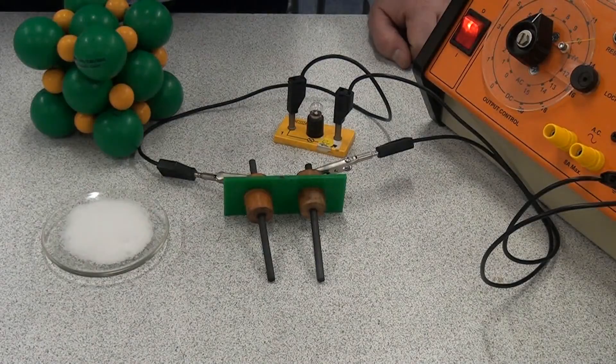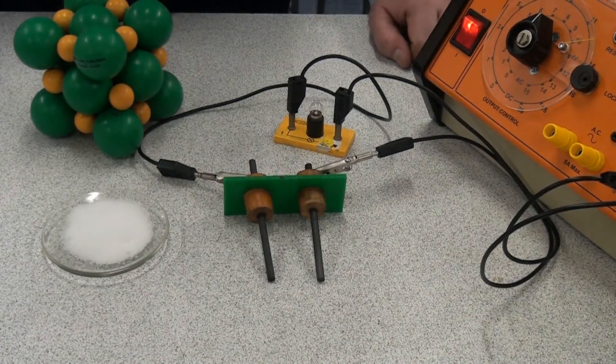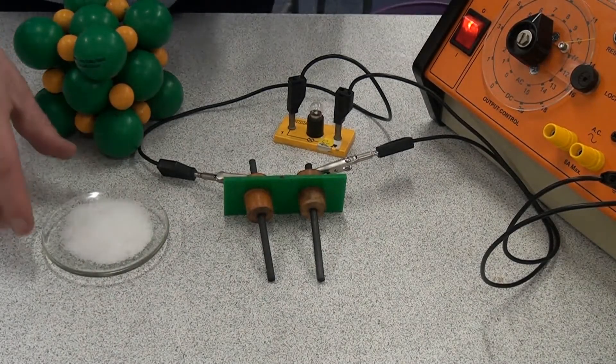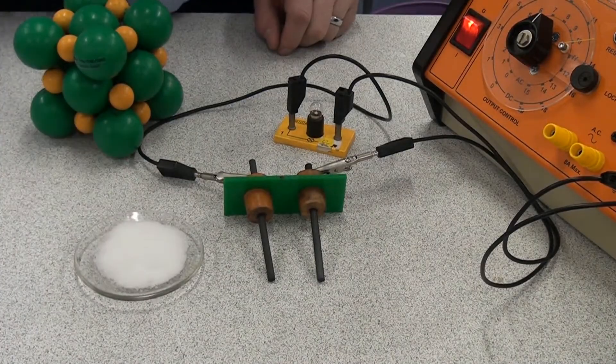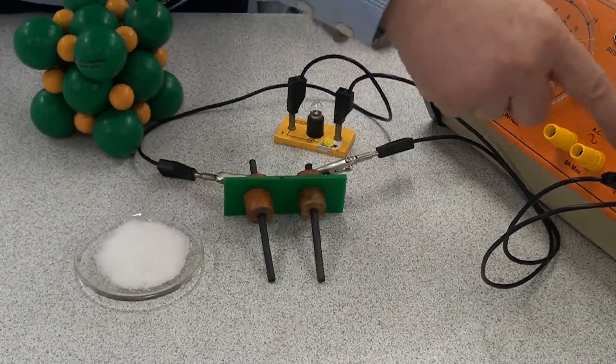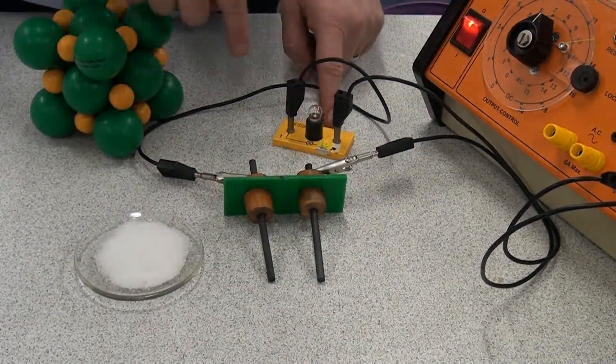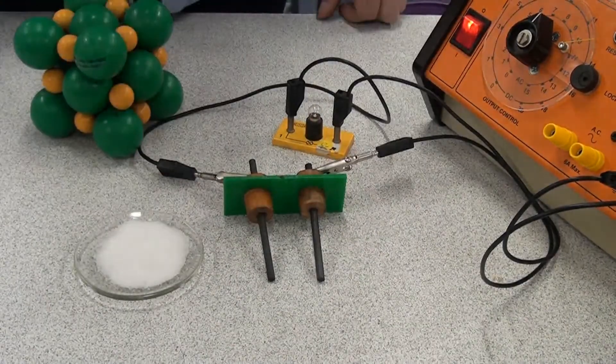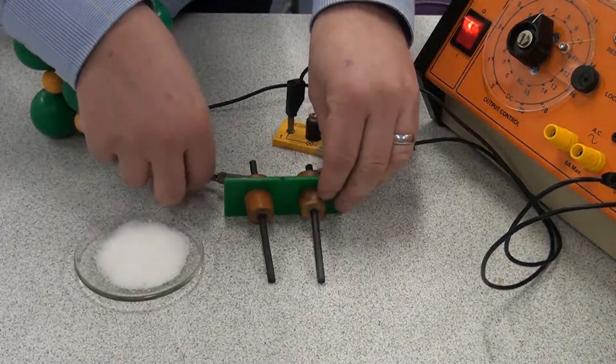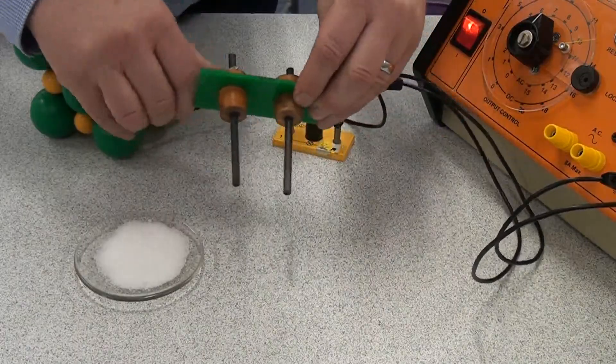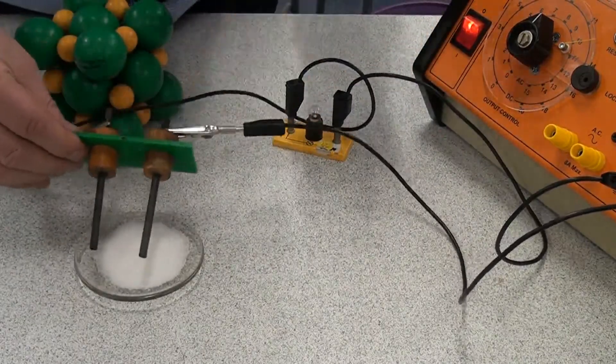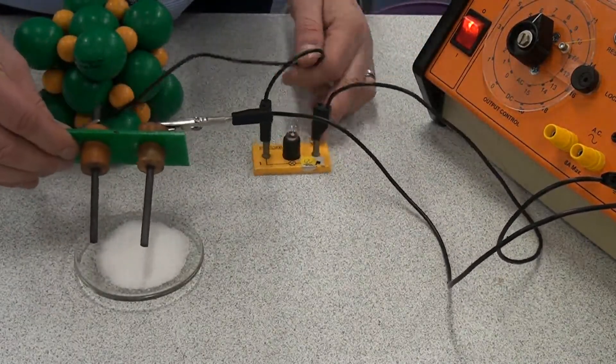So now we're going to test whether an ionic compound can conduct electricity. So I've got here some sodium chloride and I've got a power pack connected to a bulb and here we've got two carbon electrodes. So let's see what happens when we try and get the electricity to flow across this ionic compound. Will the bulb light up?